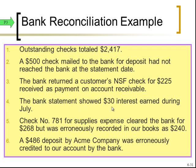Number four: the bank statement showed $30 interest earned during July. The bank already recorded a cash increase for this $30, but we did not know about it, so we need to increase our cash by that same $30. Number five: check number 781 for supplies expense cleared the bank for $268, but was erroneously recorded in our books as $240. We recorded a $240 cash reduction, but the bank recorded $268 — and the bank is right. So we need to reduce another $28 from our book side.